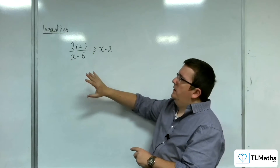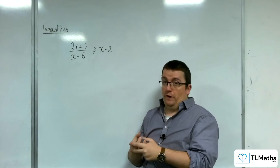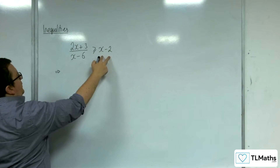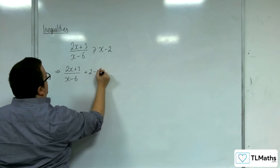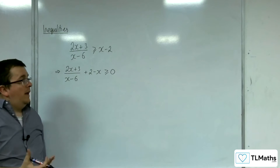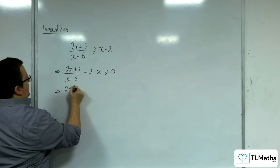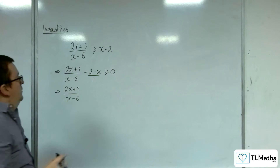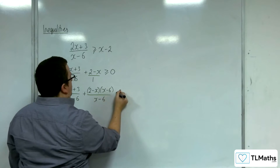Let's try to get everything onto one side of the inequality and write everything as one single function. I'm going to get the x - 2 over onto the left-hand side: (2x + 3)/(x - 6) plus (2 - x) is greater than or equal to 0. Then I want to get a common denominator, multiplying the second term top and bottom by (x - 6), giving (2x + 3)/(x - 6) plus (2 - x)(x - 6)/(x - 6) ≥ 0.